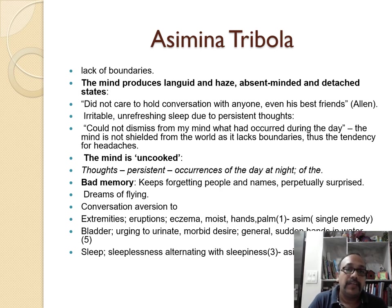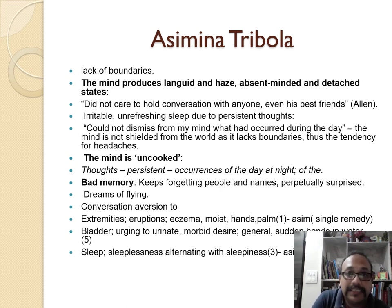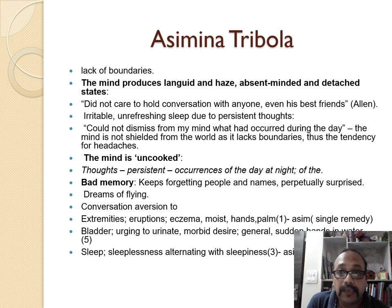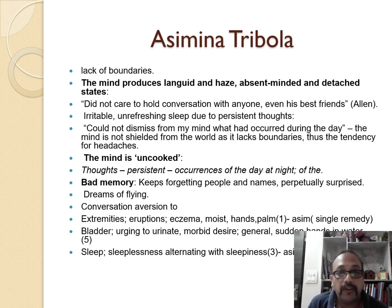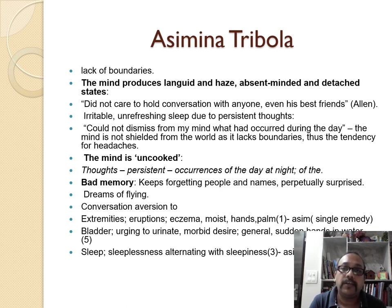They keep forgetting people and names — bad memories are a theme of this whole subclass. Dreams of flying and conversion. I found a few rubrics: in extremities, eruption eczema, moist palms. In the bladder chapter, there is the rubric 'urging to urinate, morbid desire, sudden, when putting hands in water' — only five remedies are there and Asimina is one of them, along with Lysin. In the sleep chapter, sleepiness alternating with sleeplessness — other medicines in this rubric are Asimina, Crotalus horridus, and Lysin.